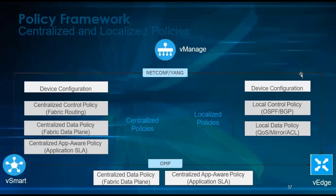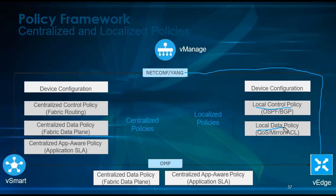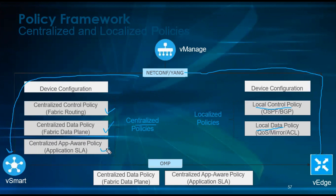In the policy framework, we have two types of policy which are configured on vManage. One is the localized policy, which directly goes and exits on the vEdge into the running configuration. That's where you have the local control policy, which is related to route maps, route policy, and all those things. Data policy and QoS mirror like CLS are also directly configured on the vEdge.